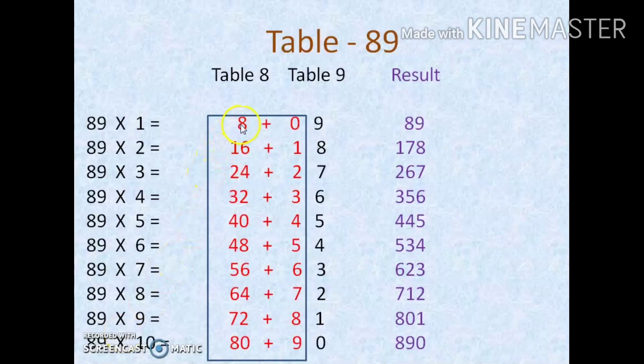So first what I am going to do is add 8 with 0 and attach 9 at the end, so we get 89. 16 plus 1 is 17, attach 8 at the end, so we get 178. 24 plus 2 is 26, so we get 267. 32 plus 3 is 35, attach 6, so we get 356. Just like that we can complete the whole table.